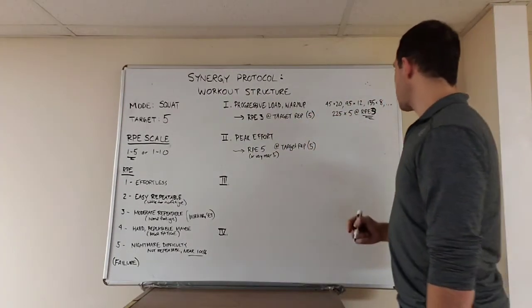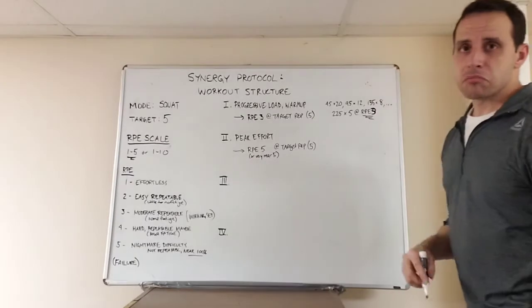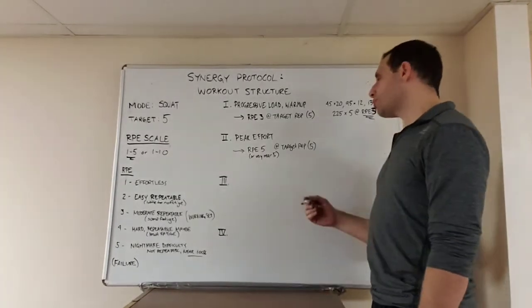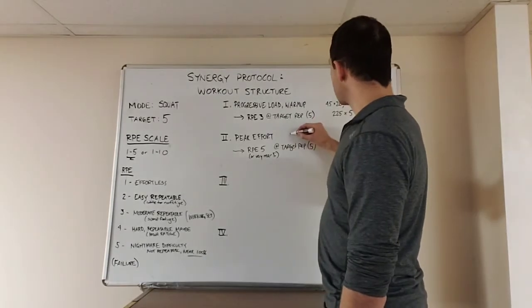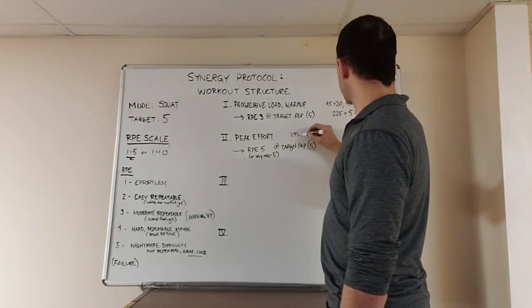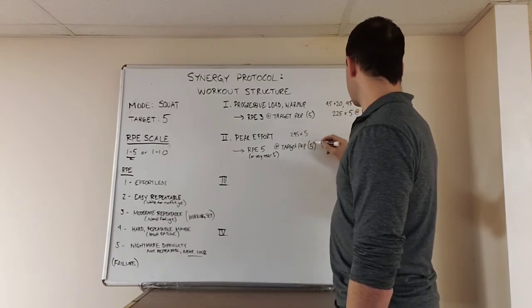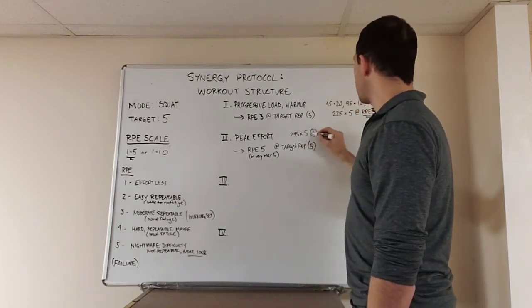So, let's suppose he got 225. It's an RPE of 3. Hmm. You know what? It's only a 3. I can throw a 10 on each side, and I know I can do it. So he does. So if there's a 10 on each side, he has 245. He gets 5 with it, and his RPE was at 4. It was hard. It was a hard set.